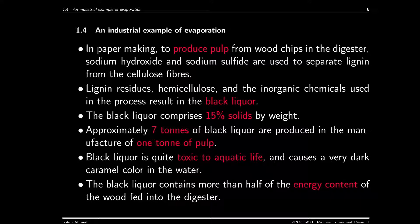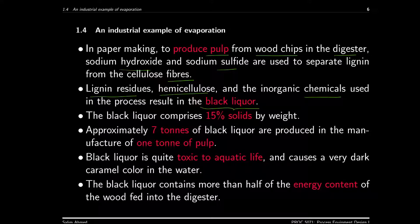In paper making, you need to produce pulp from wood chips, and that's done in the digester where sodium hydroxide and sodium sulfide are used to separate lignin from the fibers. In wood chips, the lignin is there to keep the fibers together to form a strong bond. To separate the fibers, you need to remove that lignin, which is why you need to use chemicals that will dissolve it. The lignin residues, hemicellulose in the wood chips, and the inorganic chemicals used all together form what is called black liquor — about 15% solid. Approximately 7 tons of black liquor are produced per ton of pulp, so that is a huge amount of liquor produced.